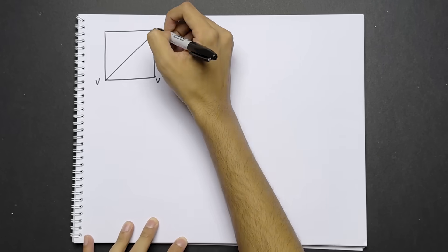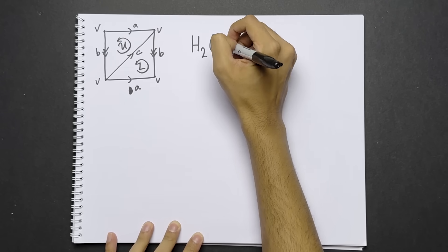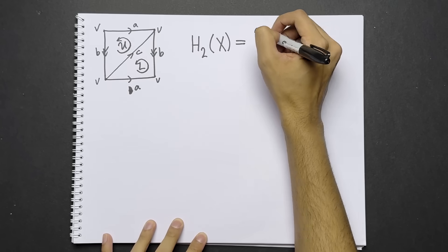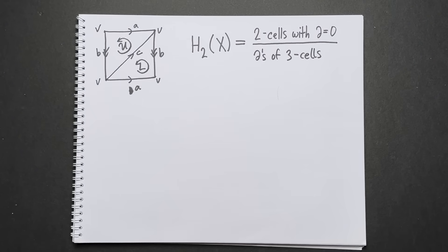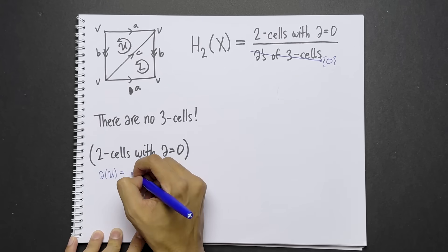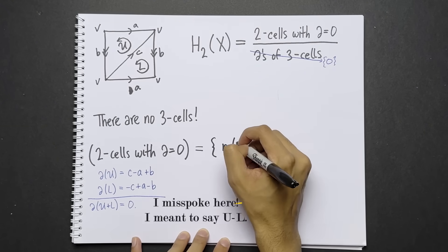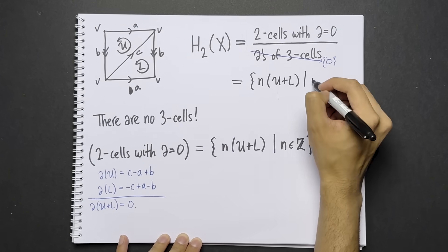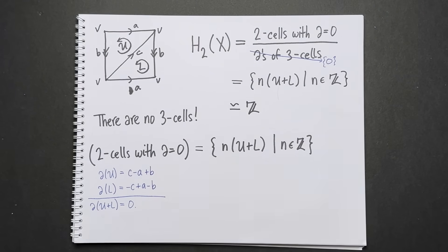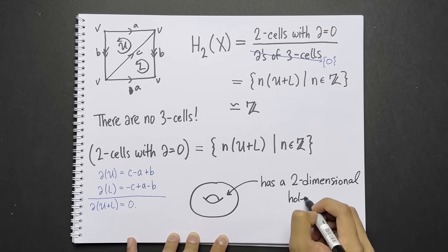But what do we mean by a higher dimensional hole? For example, consider the torus, triangulated as before. Let's calculate H2, which counts the number of two-dimensional holes. This is the space of two cells with boundary zero, modulo those which are boundaries of three cells. There are no three cells, so this thing is zero. What are the two cells with boundary zero? We calculated the boundaries of U and L already. We can see that U minus L has boundary zero. So this is the set of all integer multiples of U minus L. Therefore, we've calculated H2. It's isomorphic to one copy of the integers. This means that the hollow torus has one two-dimensional hole. This two-dimensional hole is the volume inside the torus.